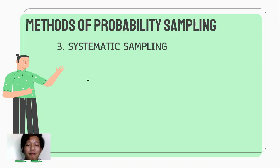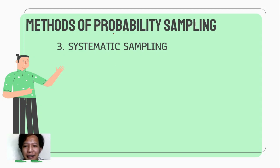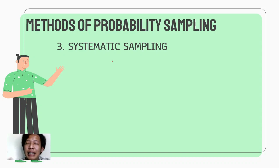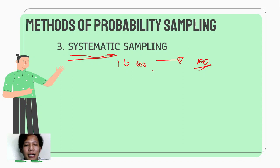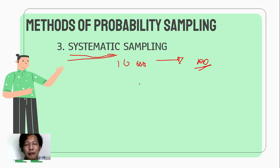Next is systematic sampling — yung sampling kung saan meron kang sistema sa pagkukuha ng sample mo. Let's say, ang respondents mo ay yung mga tao sa mall. For example, ang pumapasok sa mall kada araw ay 10,000, pero kukuha ka lang ng 100 random people. Gagamit tayo ng systematic — yung pinaka-unang papasok doon sa mall, tapos yung kasunod na magiging sample mo is 100 apart: yung pang-isang daan, pang-dalawang daan, pang-tatlong daan. Meron kang sistema.